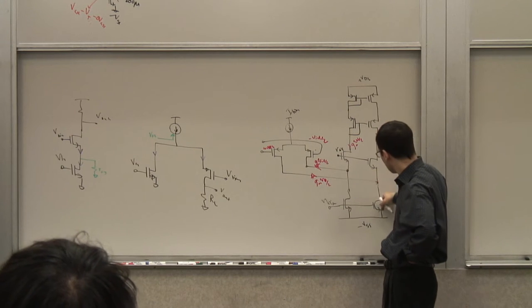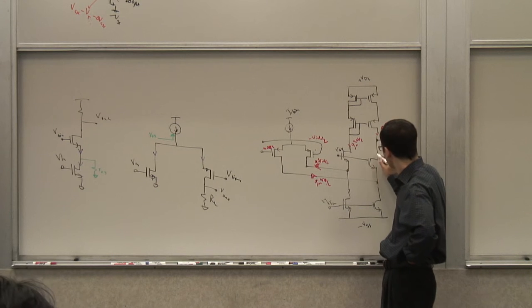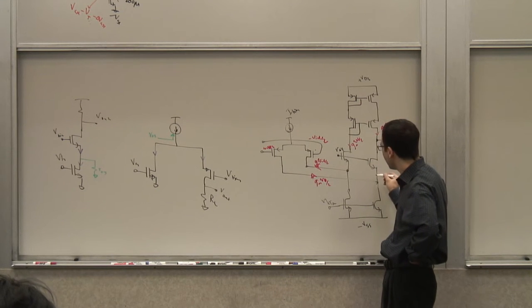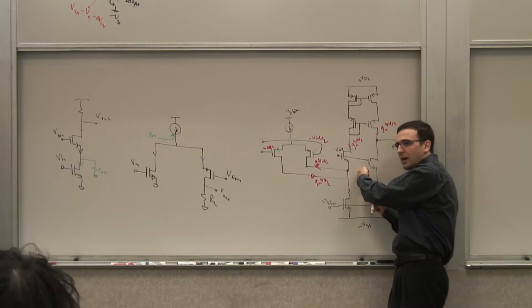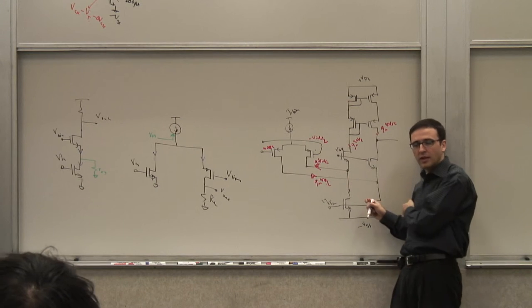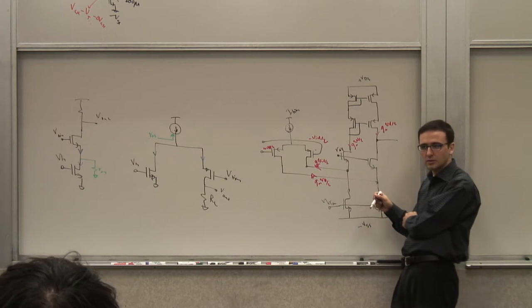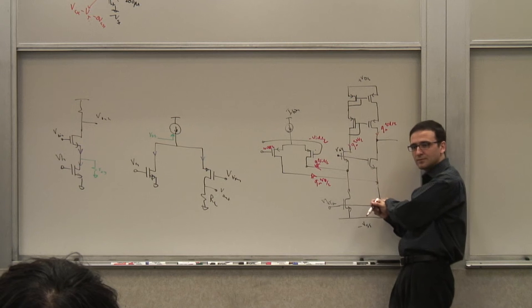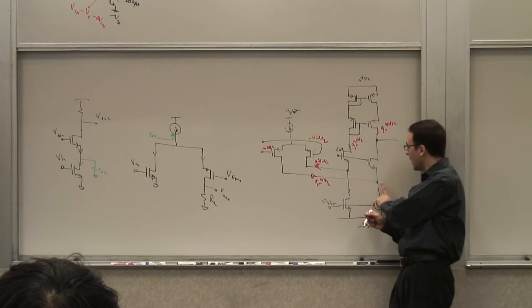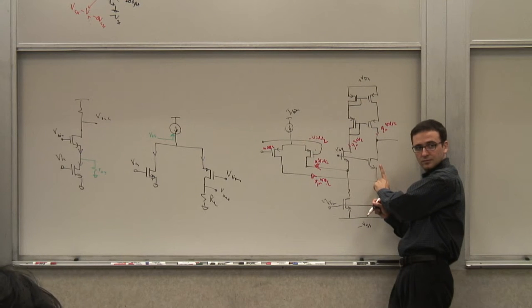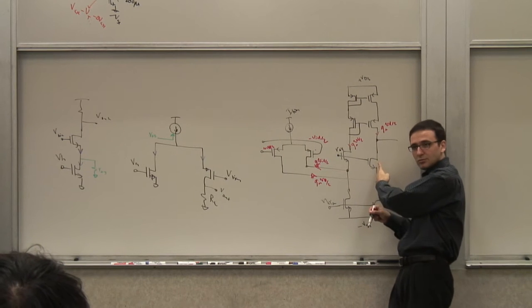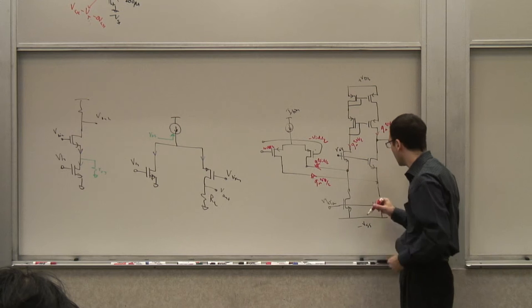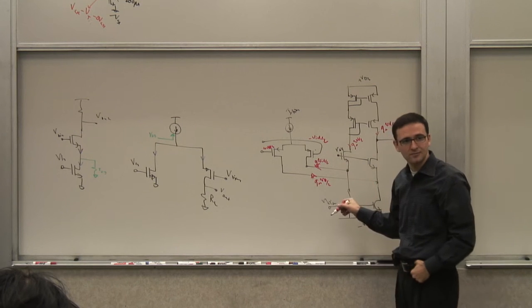This current being pulled out of here is pulled out of here, so this is Gm VID over 2. But this current is constant, supposedly, right? This is like a current source. There's no signal on this one. And that is reflected here. So this gives me Gm VID over 2. And this one, the same way. This one is the constant part. Most of the current goes through here. This is the low impedance path.